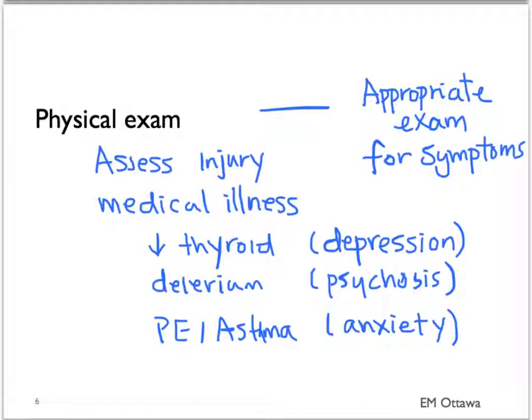Lab work is also sometimes ordered in the workup of the patient. For example, a TSH might be ordered to rule out hypothyroidism. In some cases, a delirium workup or a workup for PE, including chest X-ray, ECG, and so on, may be warranted.